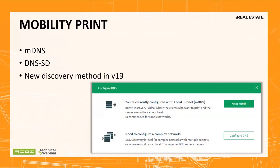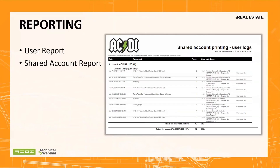Depending on how we're accounting for things, reports can be run and even automated to provide the data for chargebacks to the agent or property. There are a multitude of user reports that can be initiated with a couple of clicks, and the same with shared accounts. You could even print invoices for properties with PaperCut. And if you really want to see everything, you could turn on the option to charge the personal account of the agent and allocate the job to shared accounts for reporting — just a matter of which checkbox to make that happen.